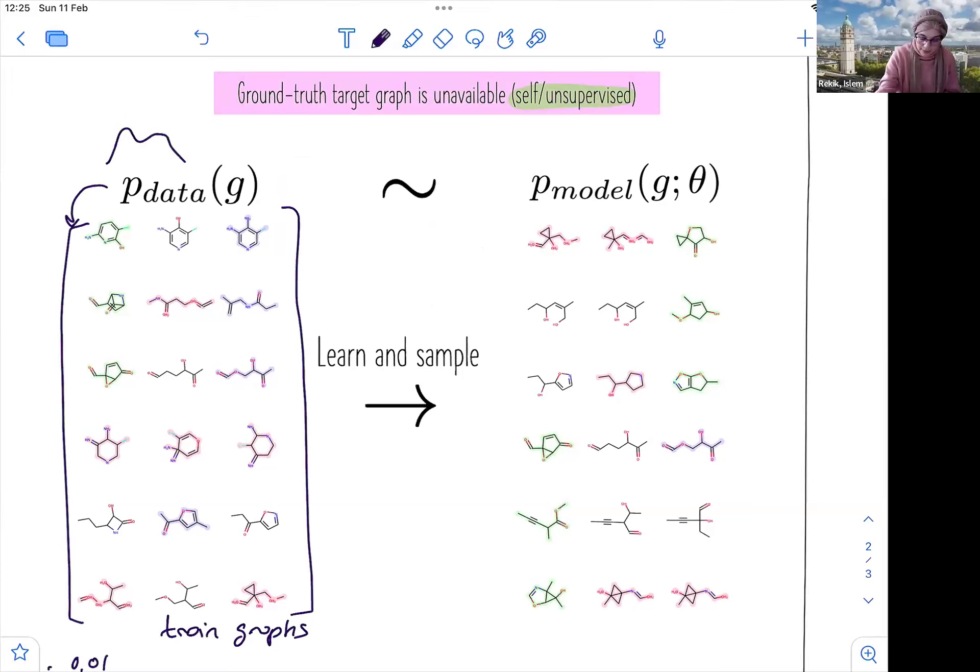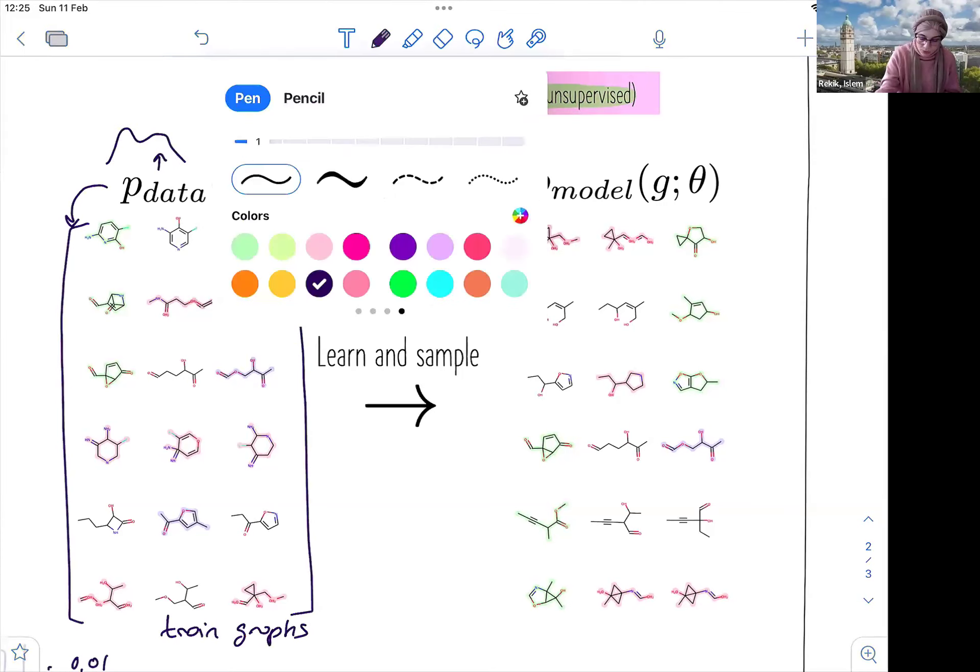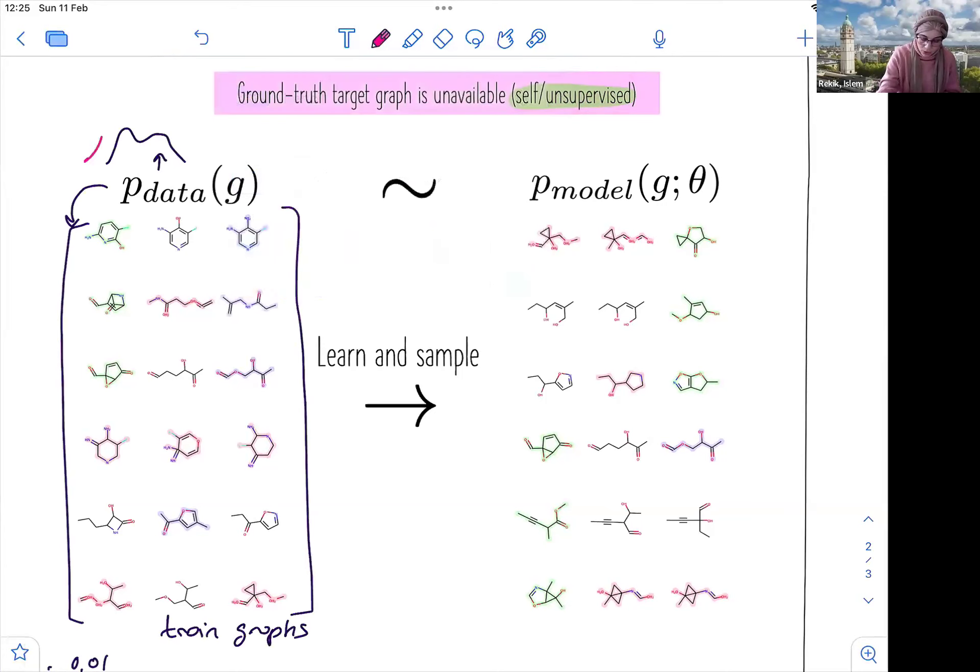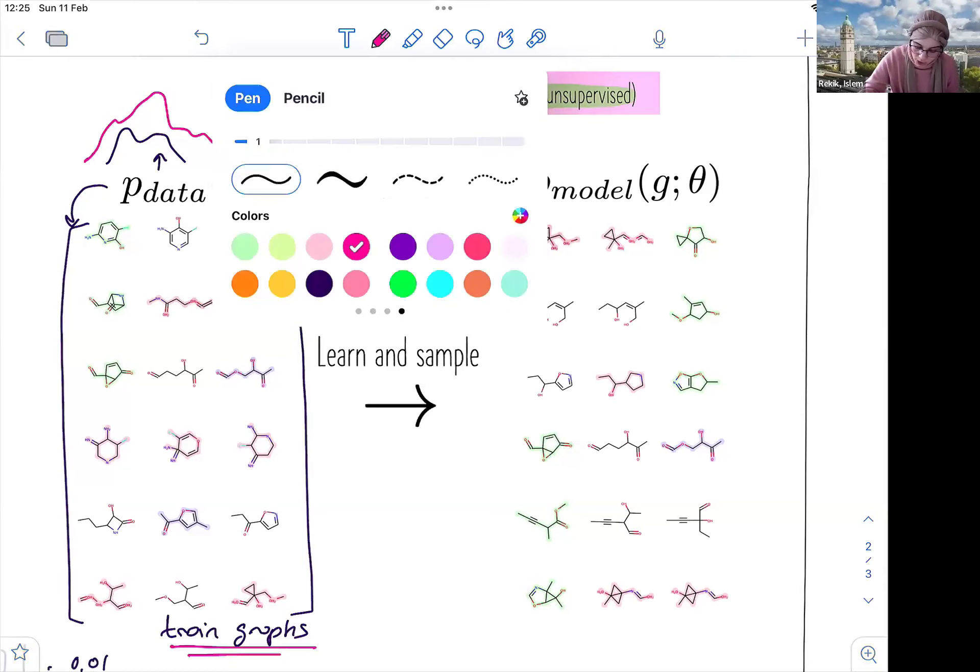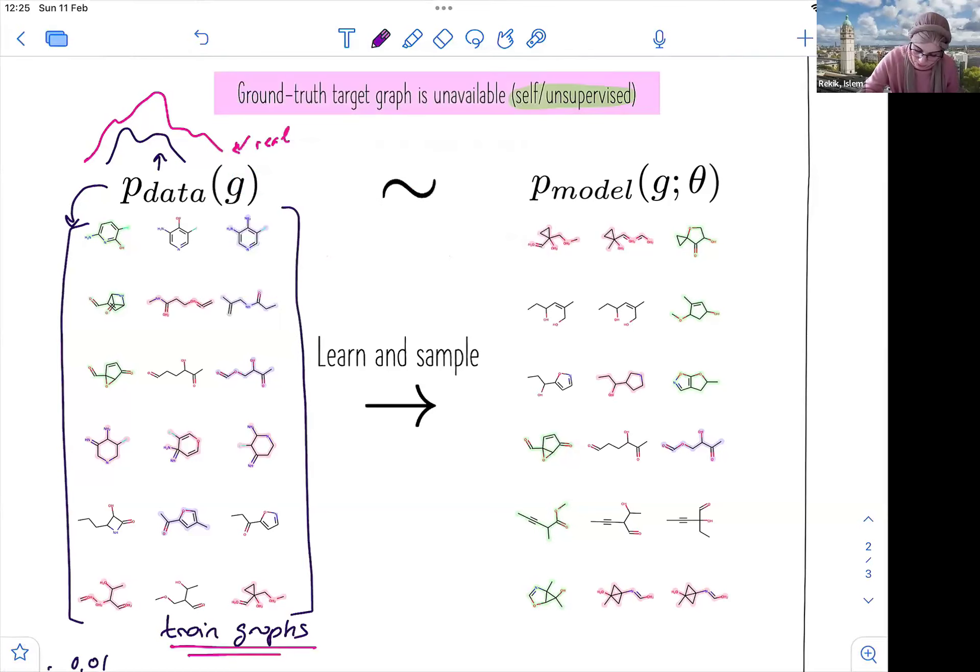So the P data is approximated by this set of available trained samples or trained graphs. And we don't have access to the real distribution. So maybe the P data will look like this. But the real distribution, including all possible samples, will look like that. I don't know. So maybe a bit different or very different.